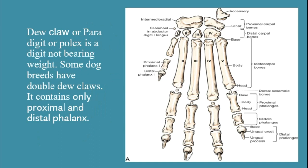Assalamualaikum. Welcome to Vetlek. Today I am going to discuss the anatomy of digits of the forepaw of dog. Digits are the last part of the limb of dog and there are total 5 digits in the forepaw of dog.